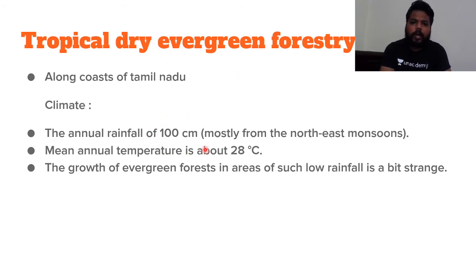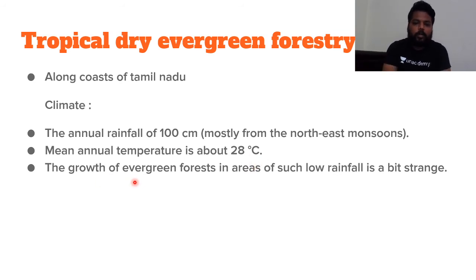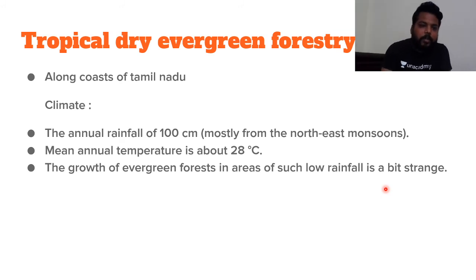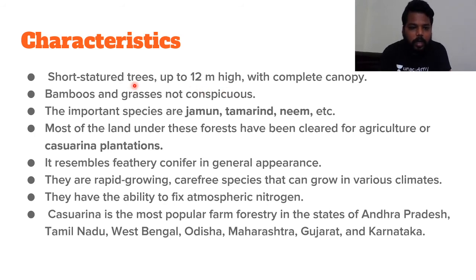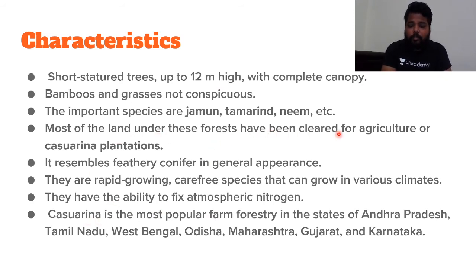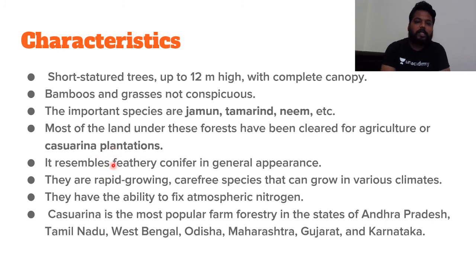Tropical dry evergreen forests are found with annual rainfall around 100 cm, all along the coast of Tamil Nadu — the only region that experiences rainfall in the winter season from the northeastern monsoon. Temperature is around 28°C. The growth of evergreen forestry in areas of such low rainfall is unusual, but it is explained by the northeastern monsoon which develops during winter. Characteristics: short stature trees up to 12 meters high, complete canopy, bamboos and grasses. Much of this land has been cleared for agriculture or casuarina plantations.